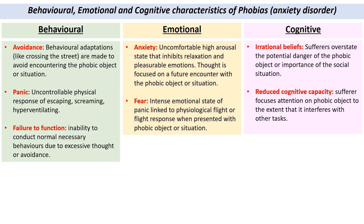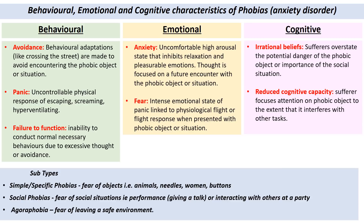Just a brief mention about the subtypes of phobias. The ones we're most likely aware of are simple phobias — phobias of objects. These could be animals such as dogs, snakes, or spiders; phobias of medical implements such as needles or dental equipment; phobias of categories of people such as policemen or bus drivers; or even very neutral objects such as buttons. Another category is social phobias — a fear of social situations which can cause embarrassment, such as giving a presentation at work or interacting with strangers at a party. And another category is agoraphobia — a generalised fear of leaving a safe environment, where leaving home causes anxiety.